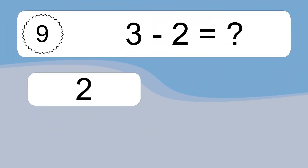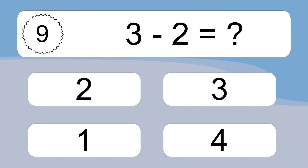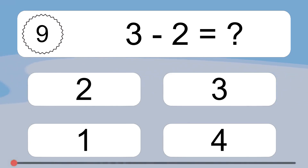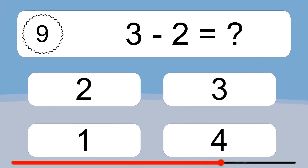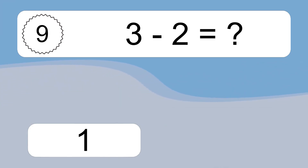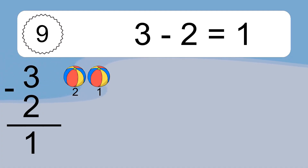3 minus 2 equals what? 3 minus 2 equals 1. Let's count it. 2, 1.